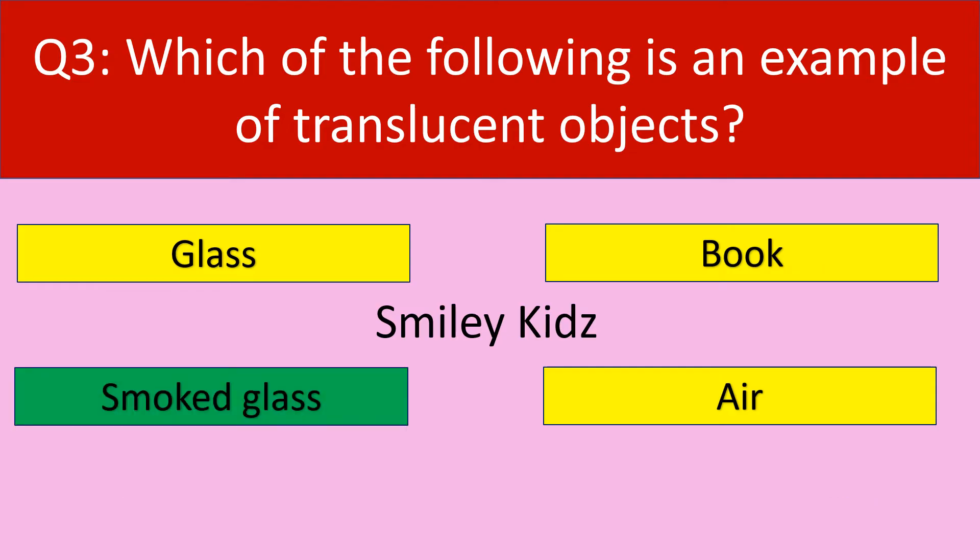The correct answer is Smoked glass. Smoked glass is an example of a Translucent object.